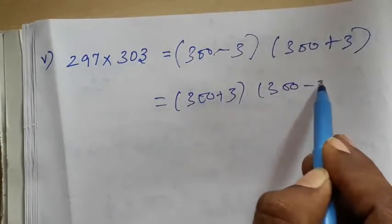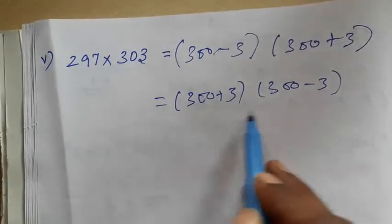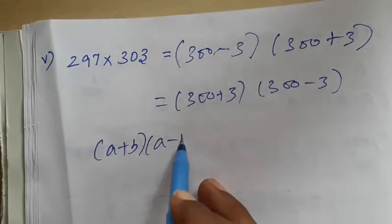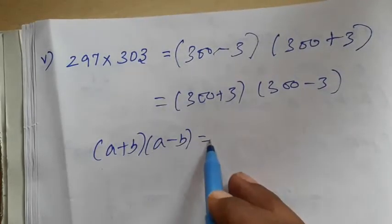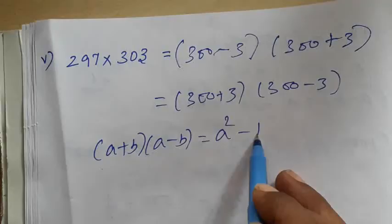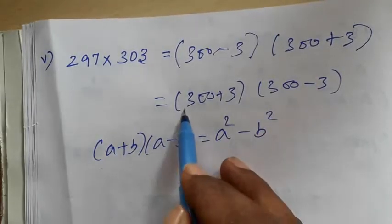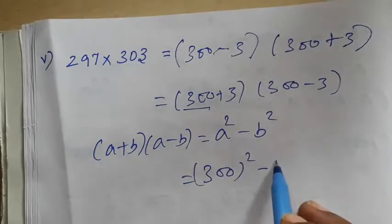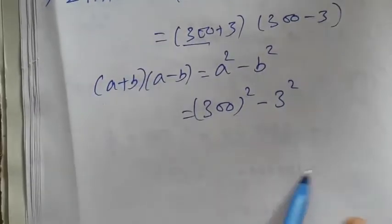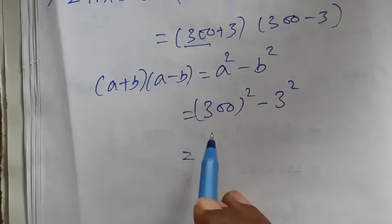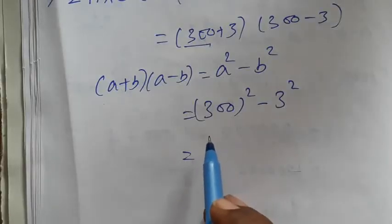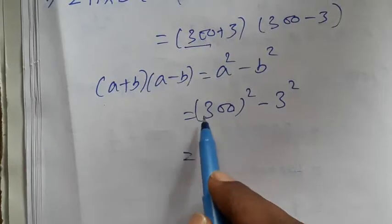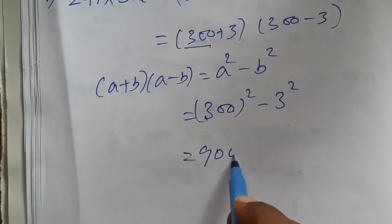3 and 3 is 33. I am going to rearrange this: 300 plus 3 and 300 minus 3. What is the formula in this? A plus B, A minus B — the answer is A squared minus B squared. Then A is 300. So 300 squared minus 3 squared. If we add 300 to 300, we will add 4 zeros.